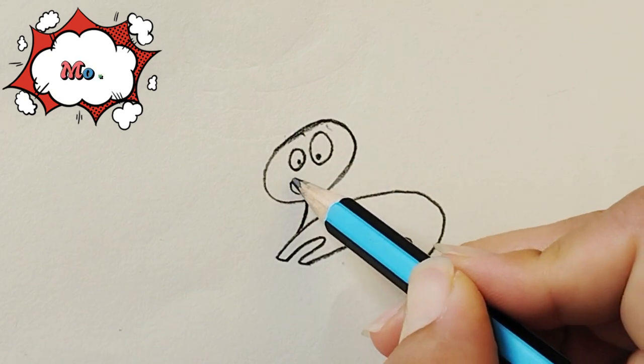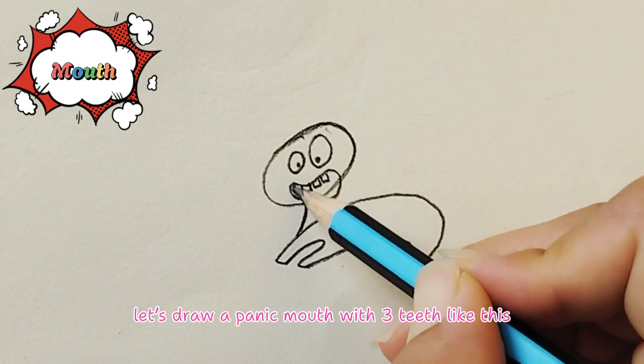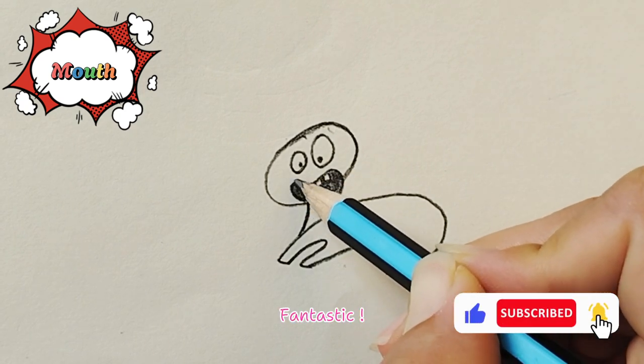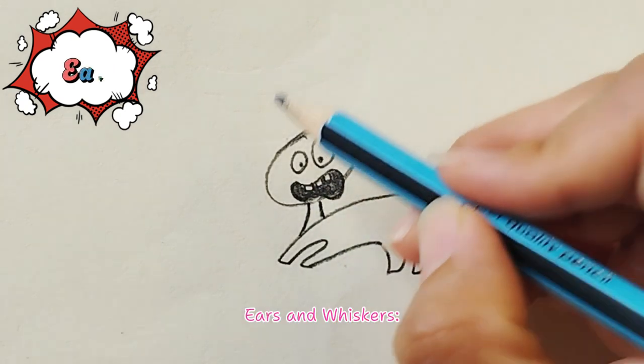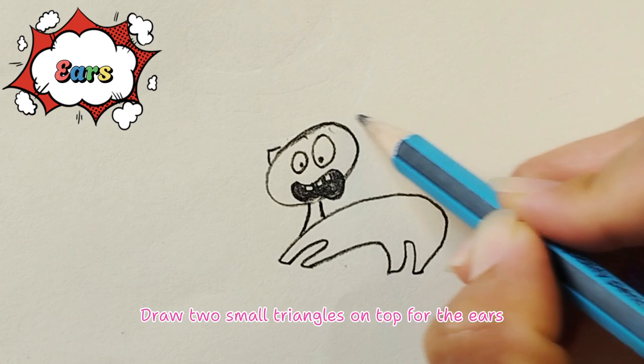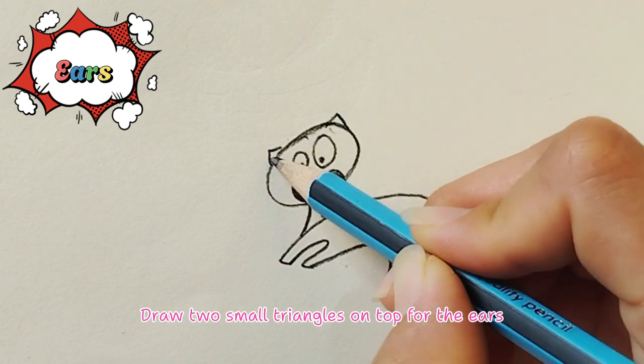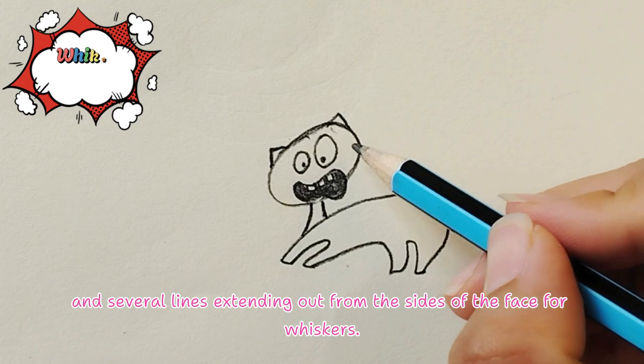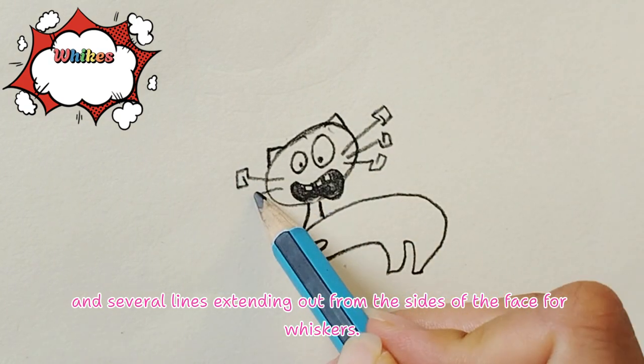Mouth: let's draw a panic mouth with three teeth like this. Fantastic! Ears and whiskers: draw two small triangles on top for the ears, and several lines extending out from the sides of the face for whiskers. So cute!